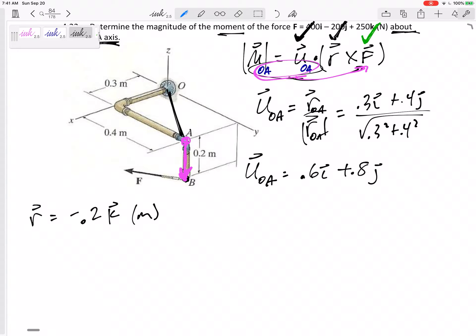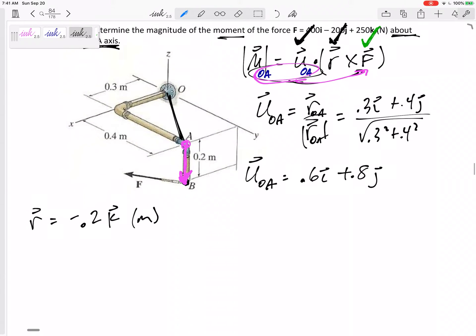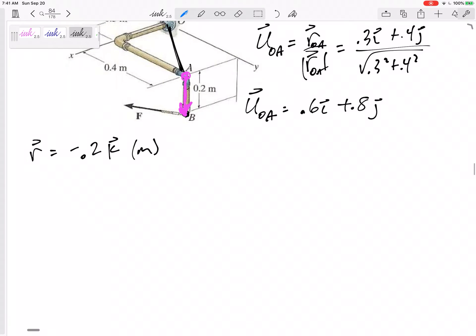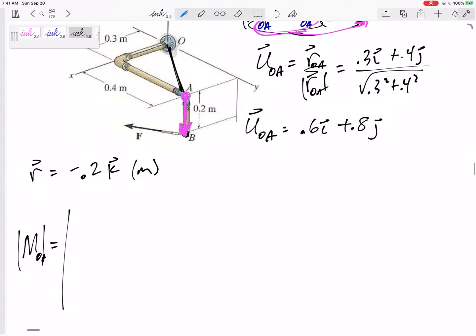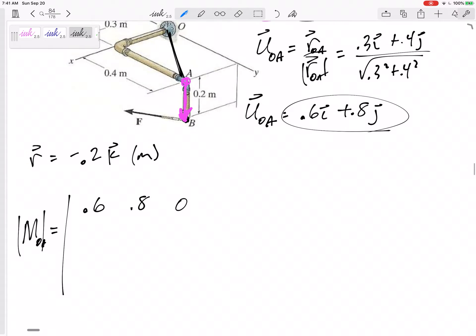I think I'm ready. The magnitude of my moment about the OA axis would be: across the top I put the u, 0.6, 0.8, and nothing in the k. Then I put the r, zero, zero, negative 0.2. And then the force that was just given to me: 400 in the i, negative 200 in the j, 250 in the k.